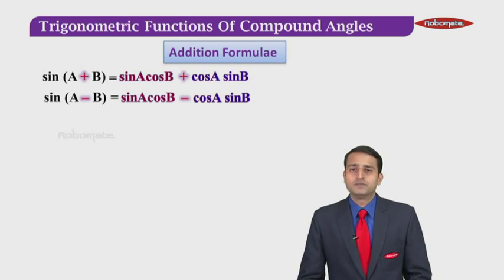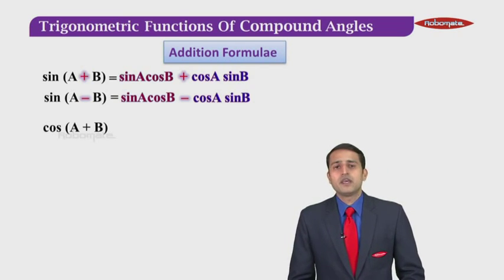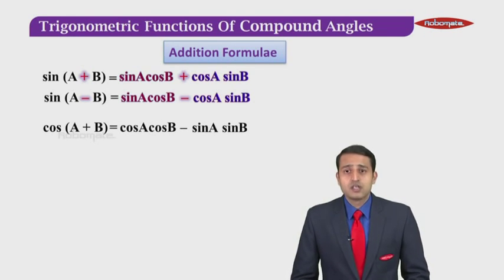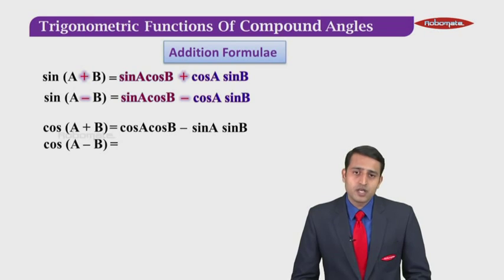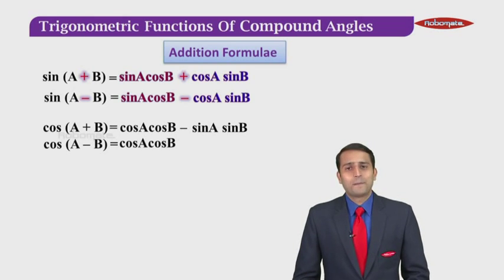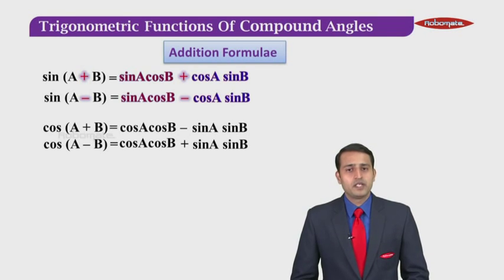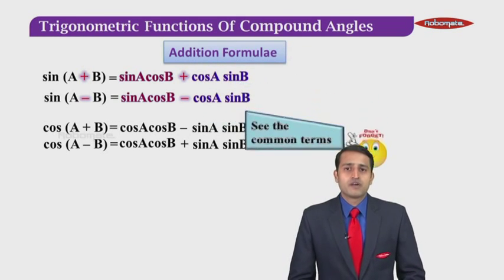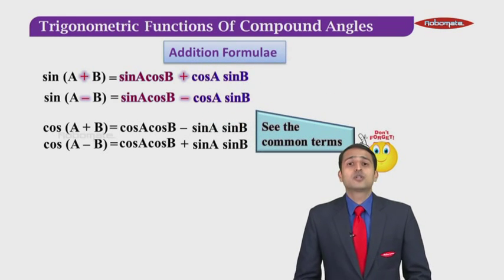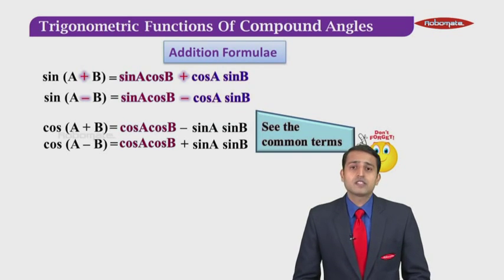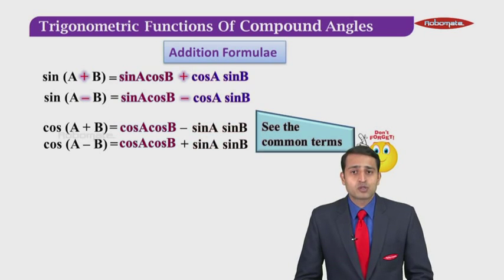Now let us look at the cosine formula. Cos of A plus B is equal to cos A cos B minus sine A sine B. Likewise, cos of A minus B is equal to cos A cos B plus sine A sine B. Again, if you observe, the two formulas have cos A cos B common to them, and they have sine A sine B also common to them.